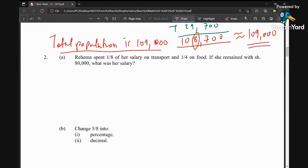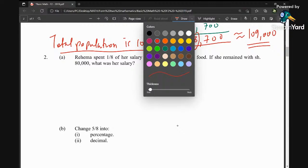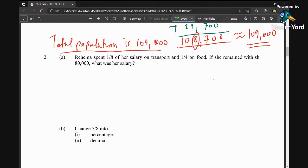Question number two: Rahima spent one over eight of her salary on transport and one over four on food. If she remained with 80,000 shillings, what was her salary? The solution here, first of all, we are going to let x be her salary.